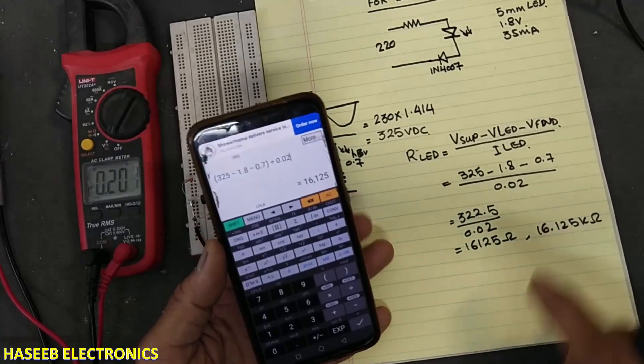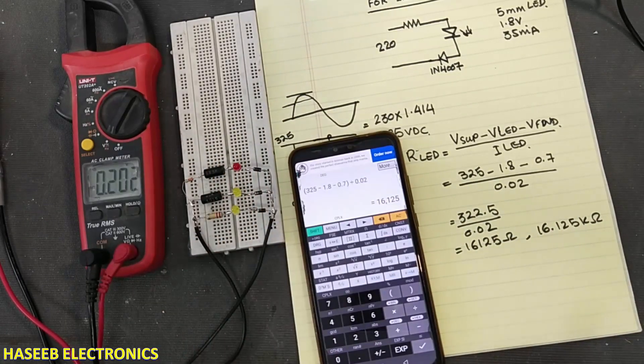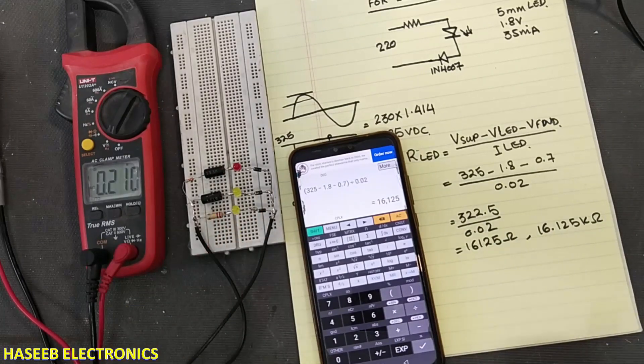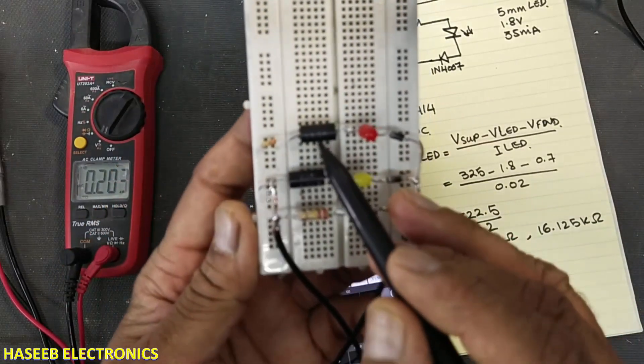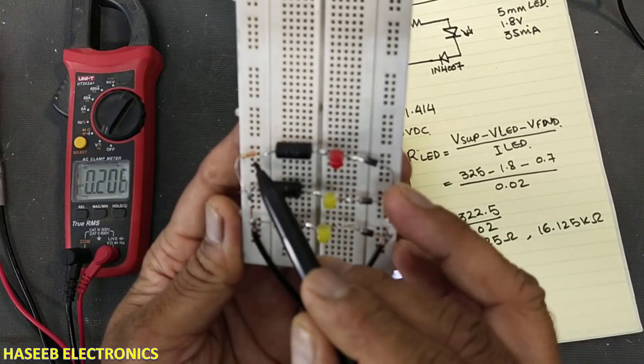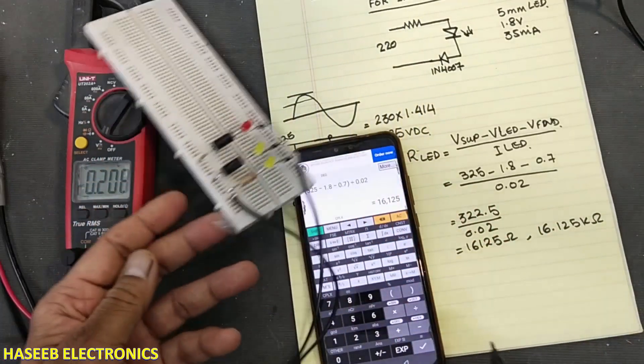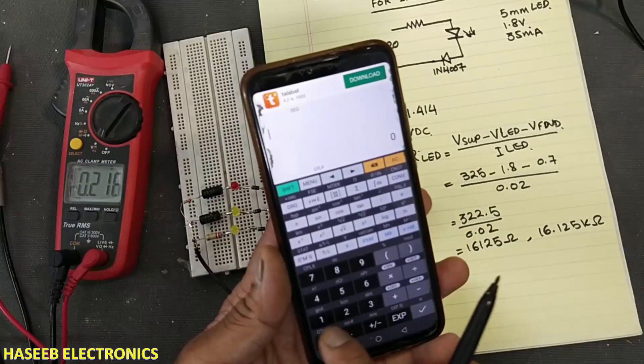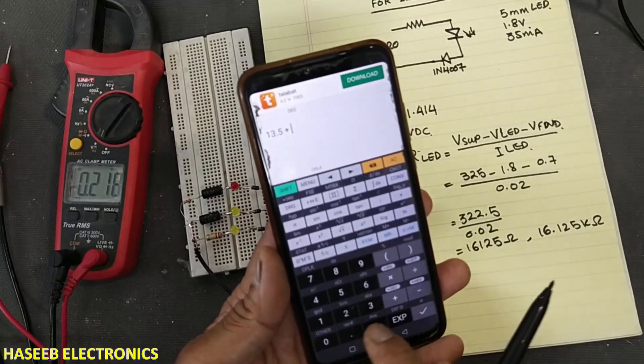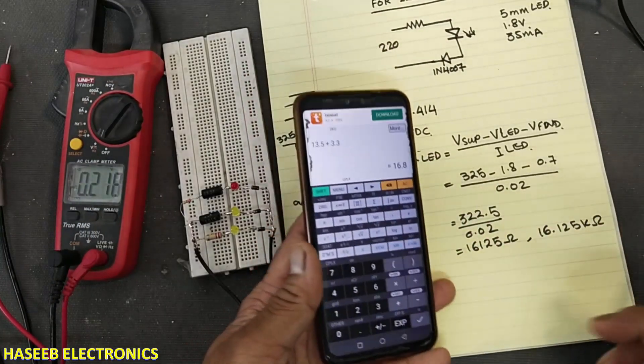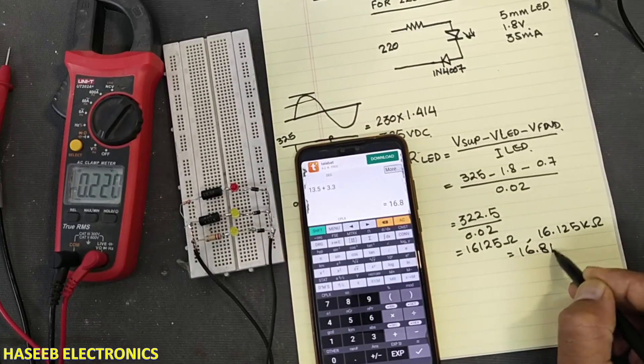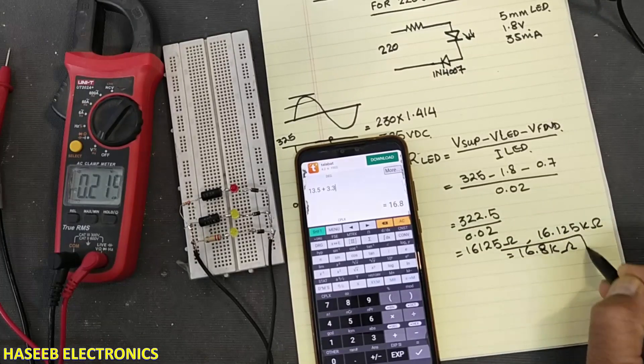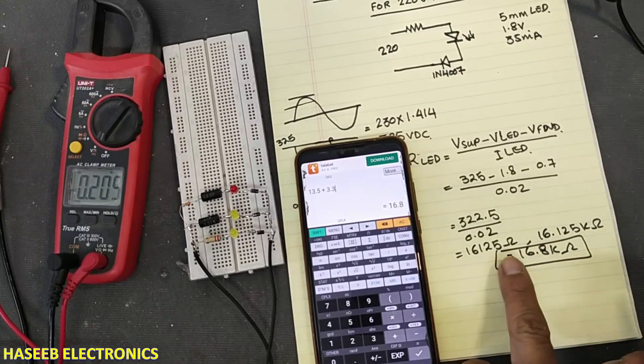This resistor we want to install. For that purpose I installed a resistor here, 13.5k and 3.3k. This time I am using 13.5 plus 3.3, it is 16.8k. That is much closer to this value. Or we can use any higher value.